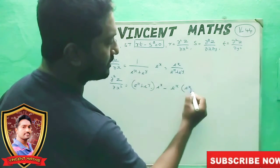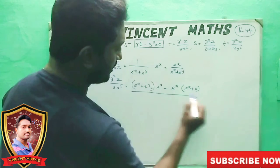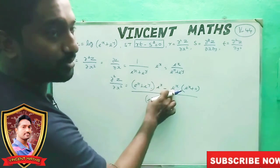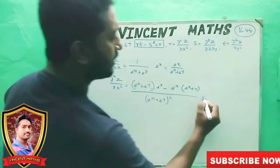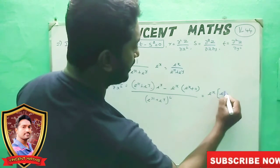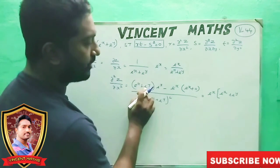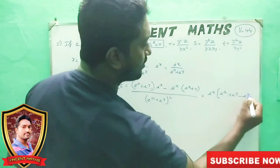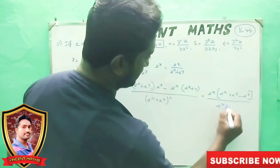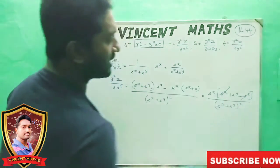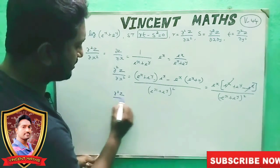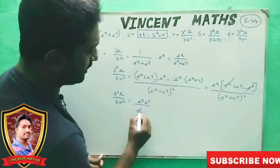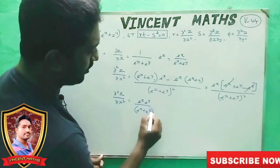Then e power x is equal to zero. Whole squared. Now dou squared z by dou x squared: e power x here, then e power x plus e power y, here, e power x, whole squared.